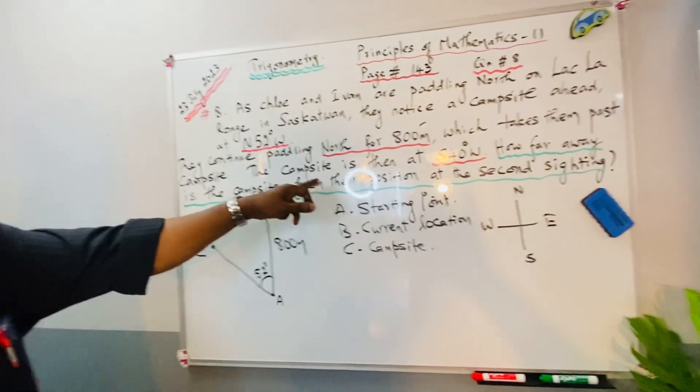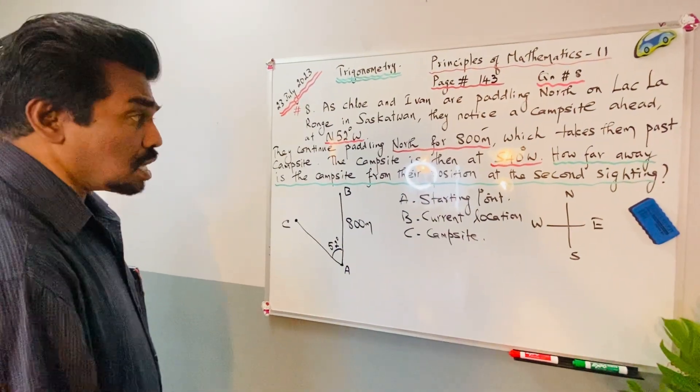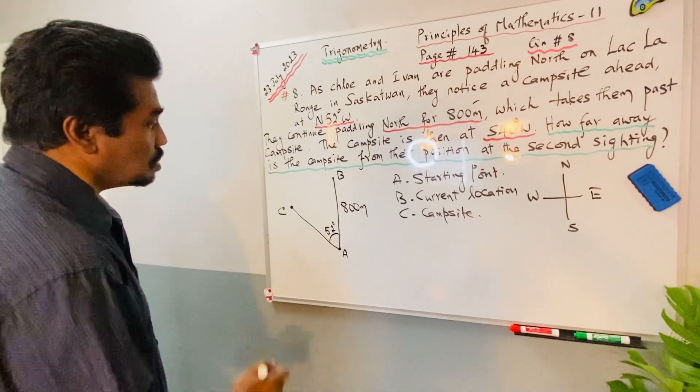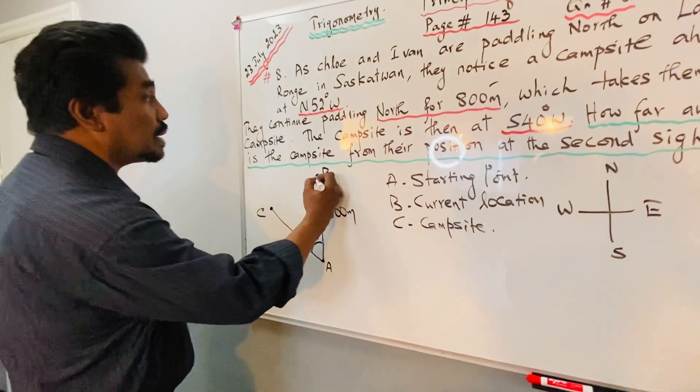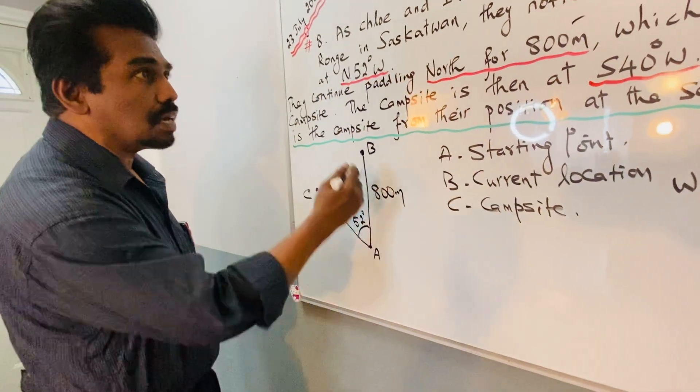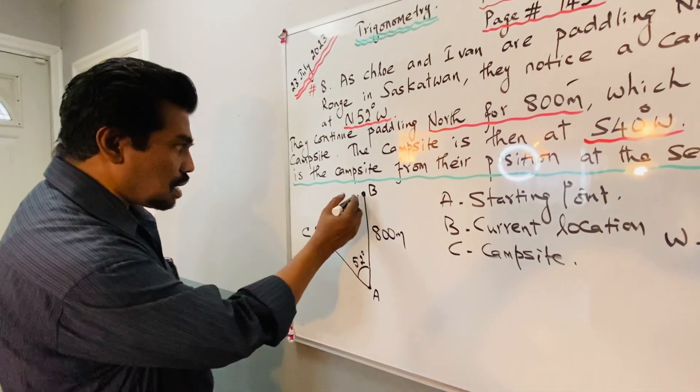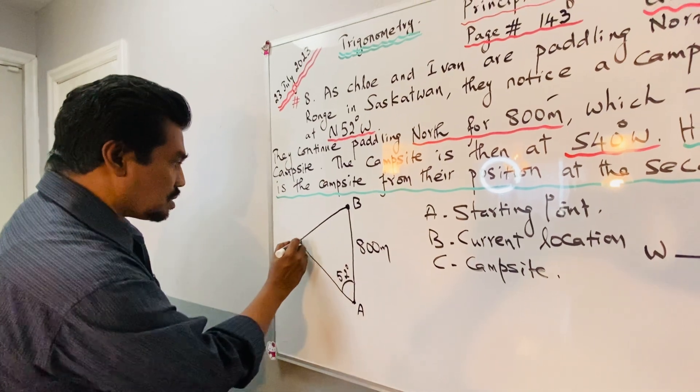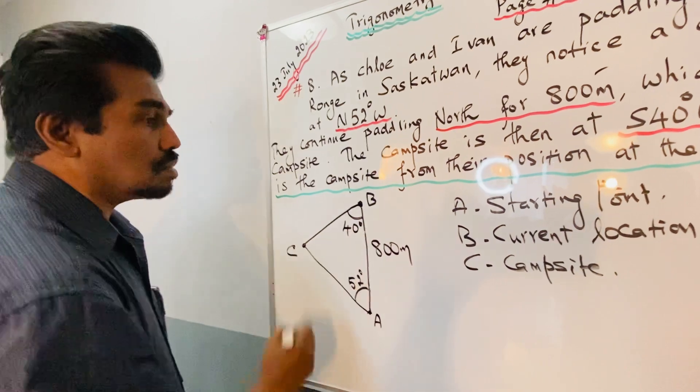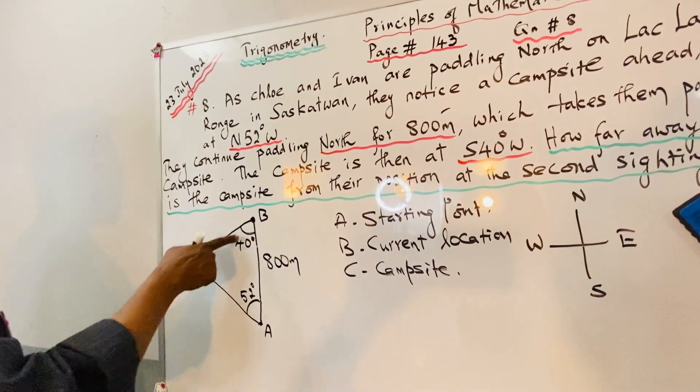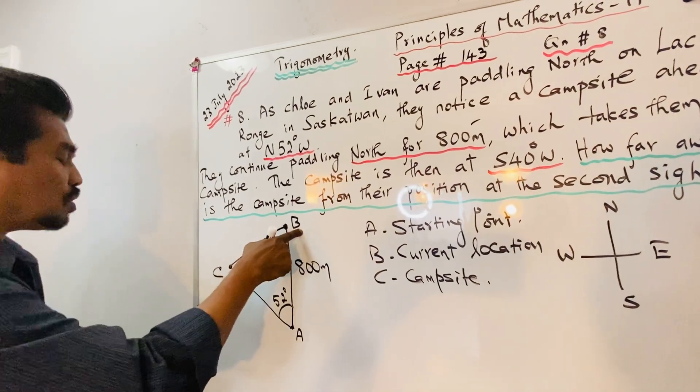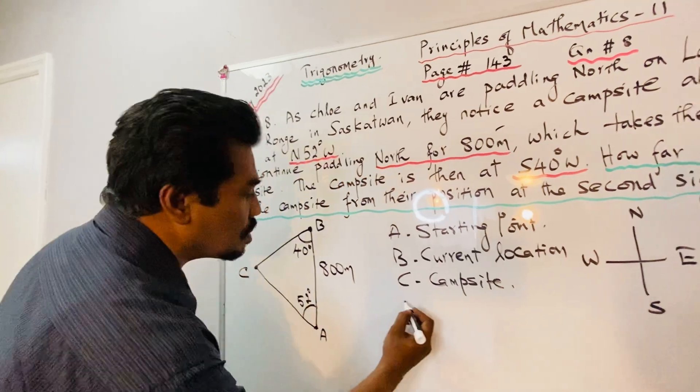The campsite is then at south 40 degrees towards west. Chloe and Ivan are now at B. They have to go down south towards west from here. This is south, so towards west I can put it here - this is the campsite at 40 degrees. The question is: how far away is the campsite from their position? We have to calculate B to C, the distance between B and C.